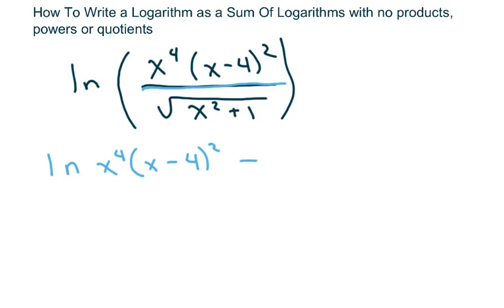And then I'm going to break this up and write it as ln, and instead of writing it as square root, I'm going to write it as x squared plus 1 to the 1 half.